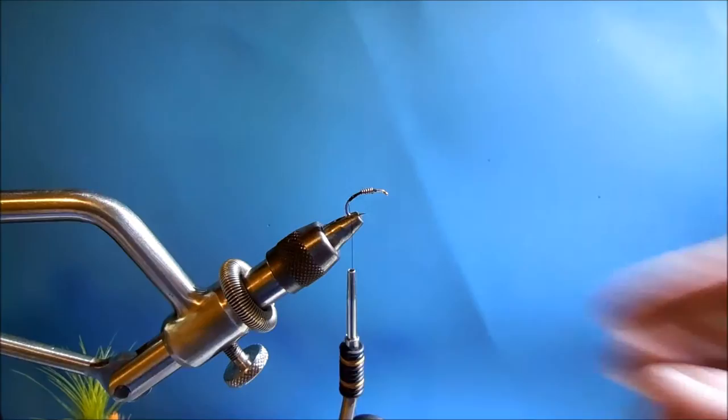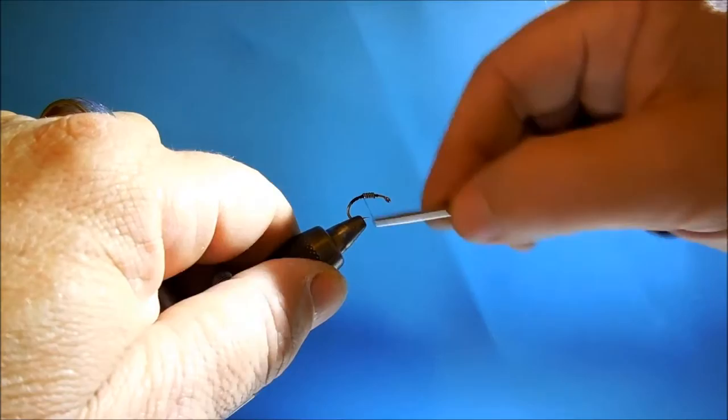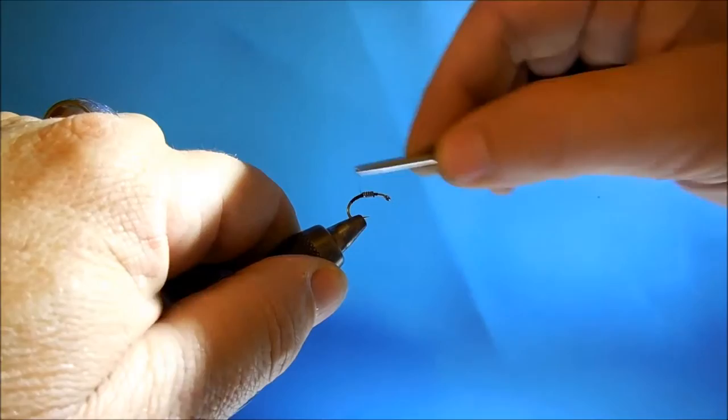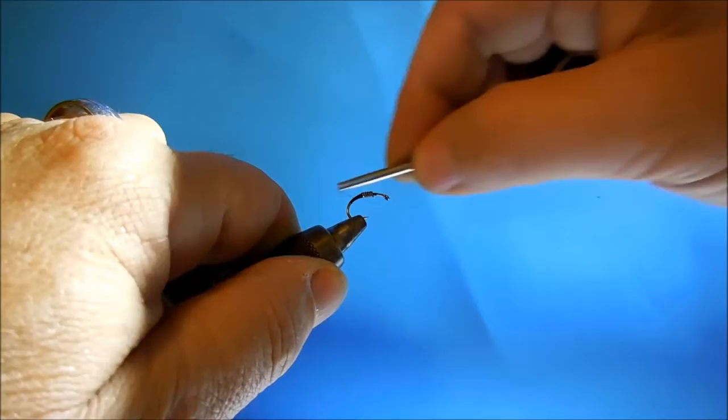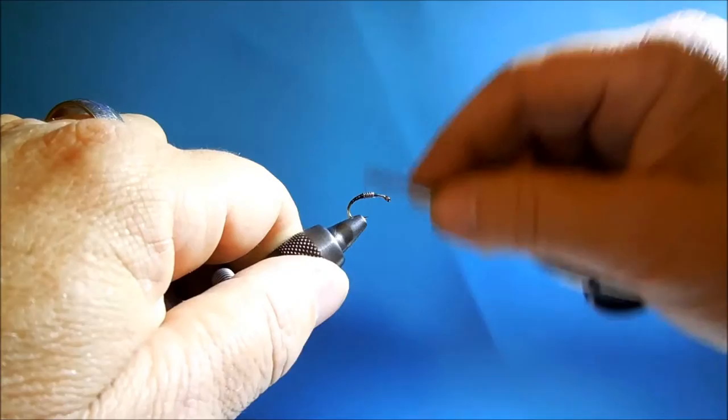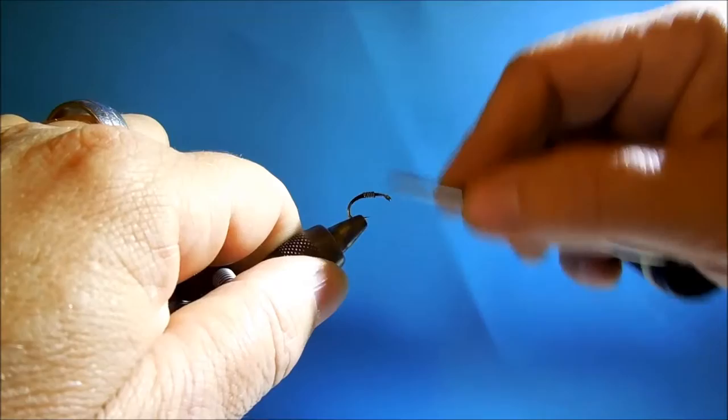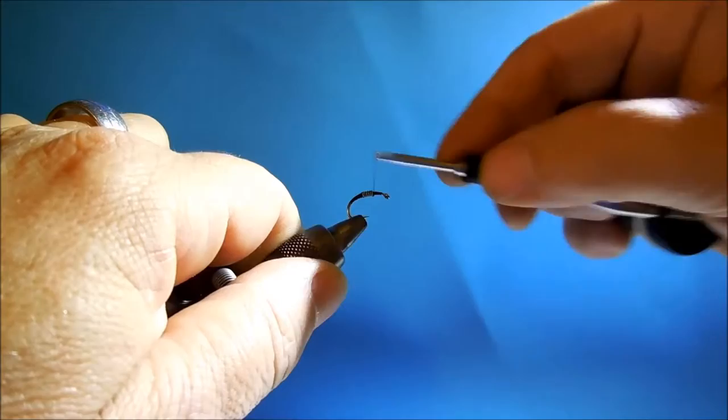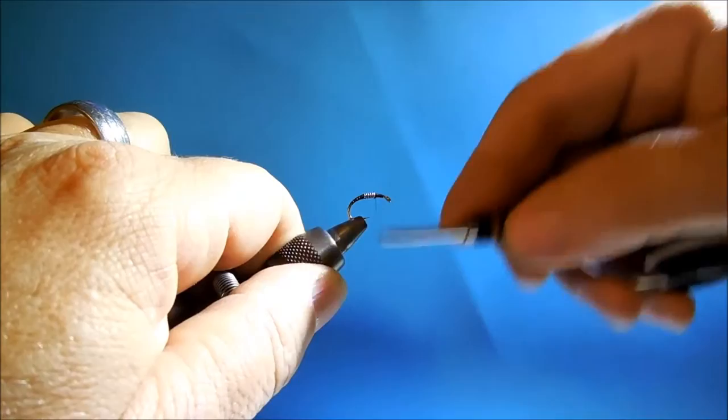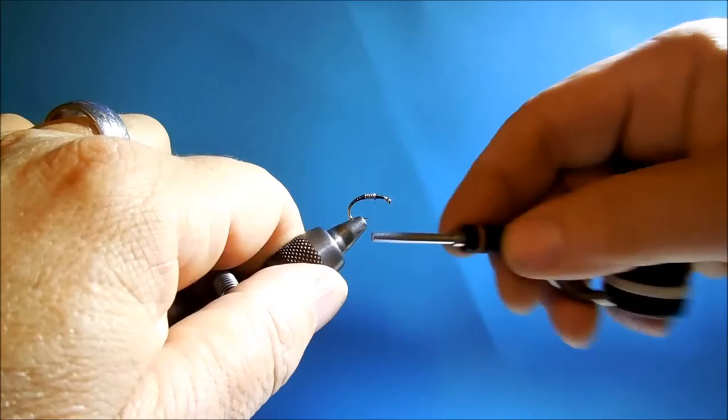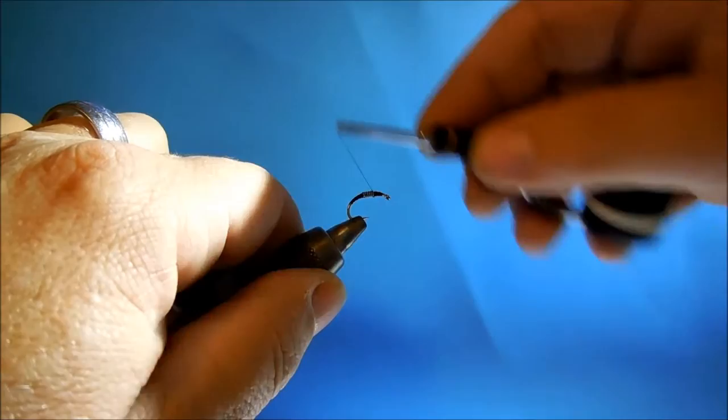Now, we'll continue with the thread wraps. Building a tapered body from the edge of the lead free wire. Go across the wire to the front of the fly. And do exactly the same as what we do on the back end of the fly.